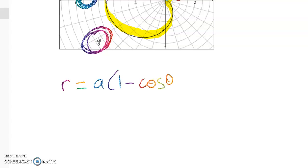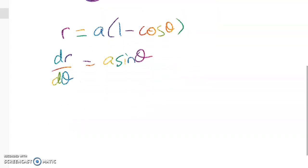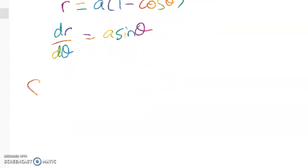So r equals a times that. So dr/dθ equals a sin θ. So my curve length is equal to this.